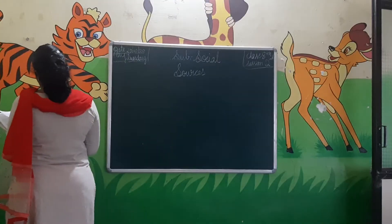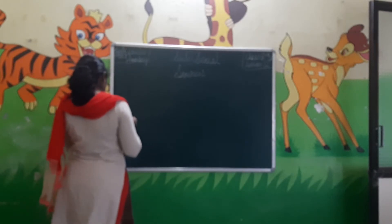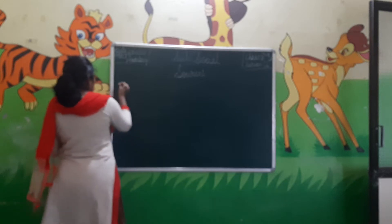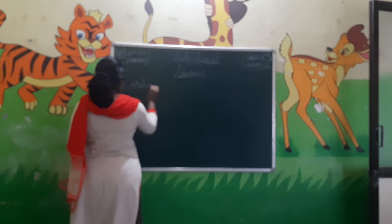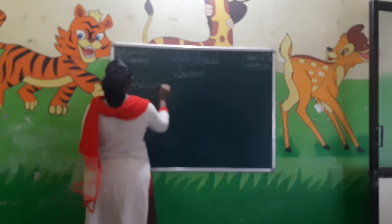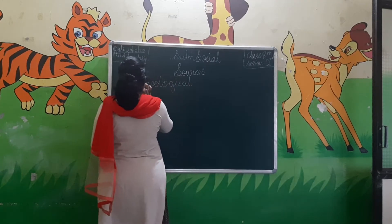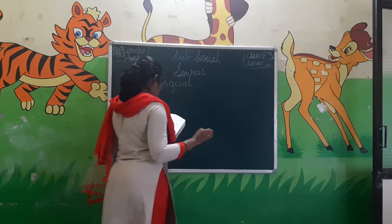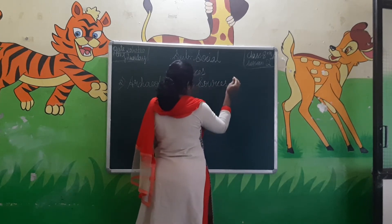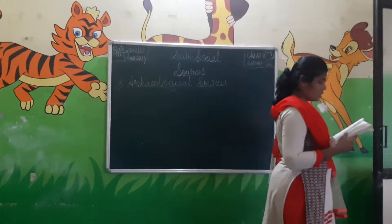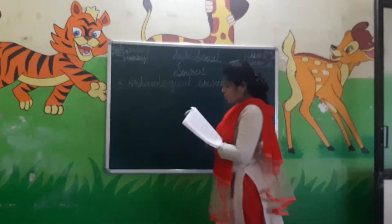We have completed the first sources, that is about the literary sources. Now we are going to learn about the archaeological sources. Archaeological sources has been divided into four types.